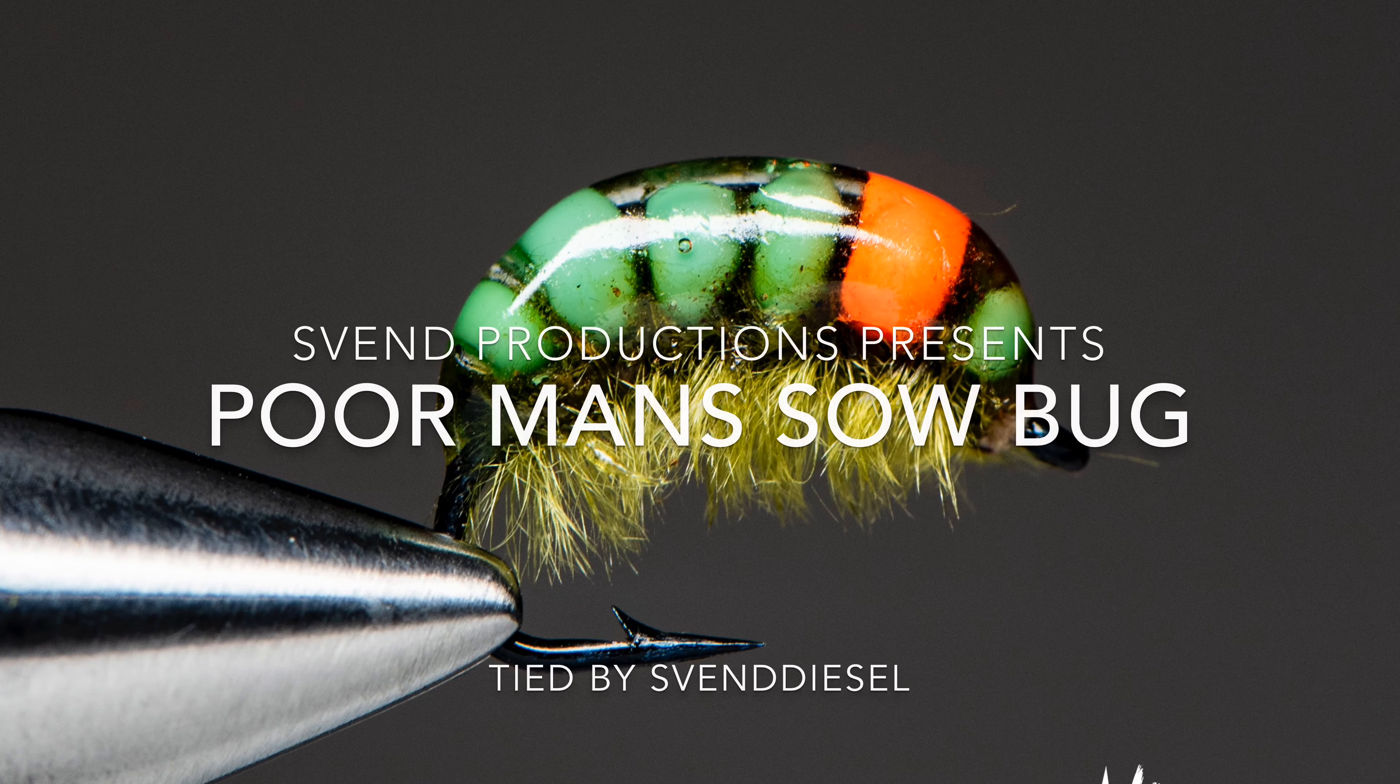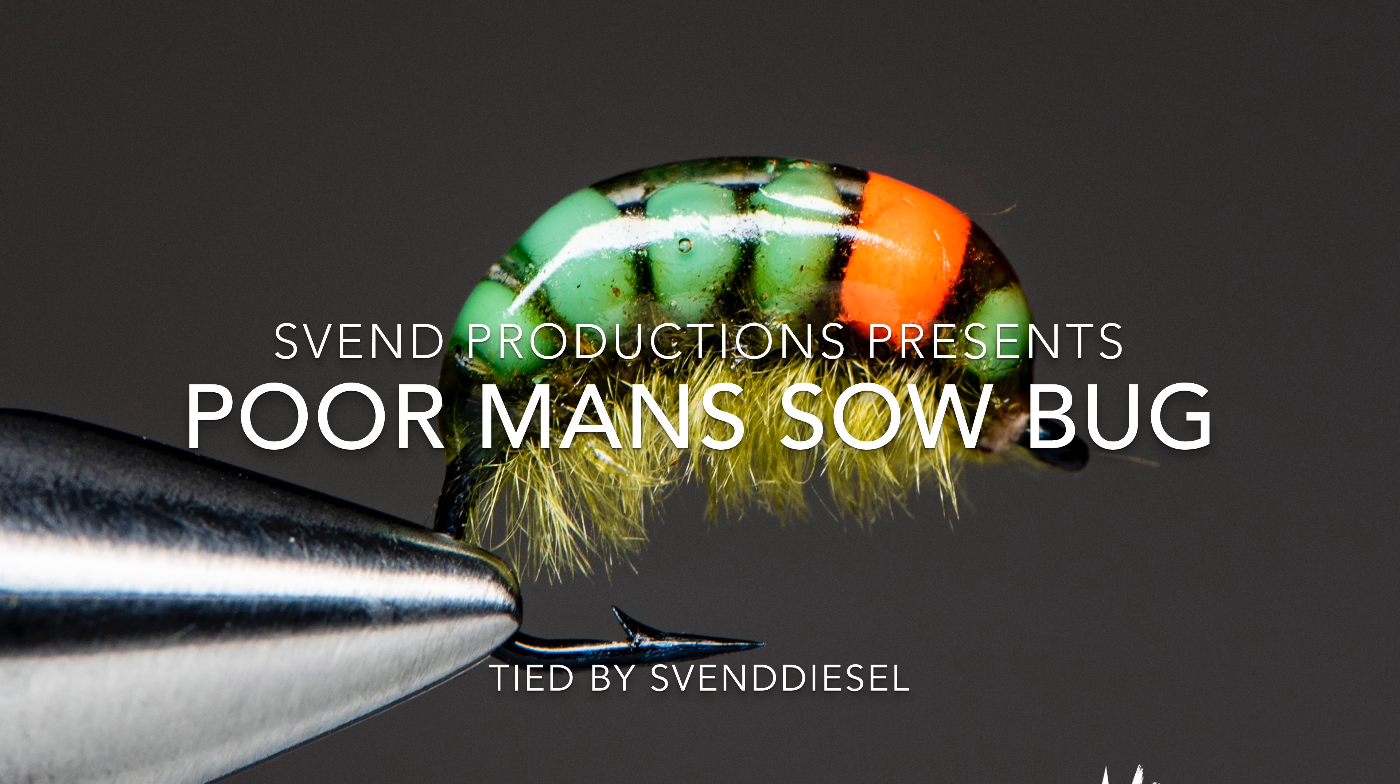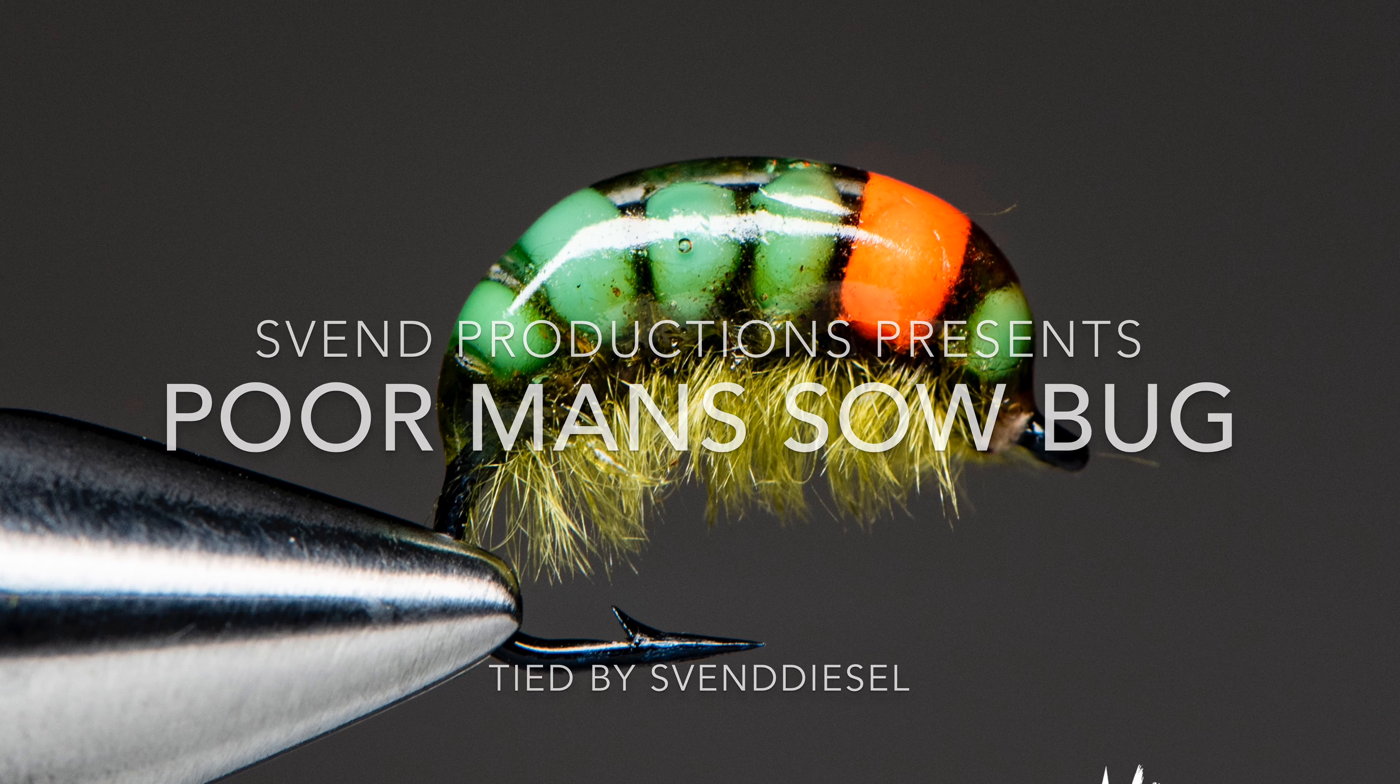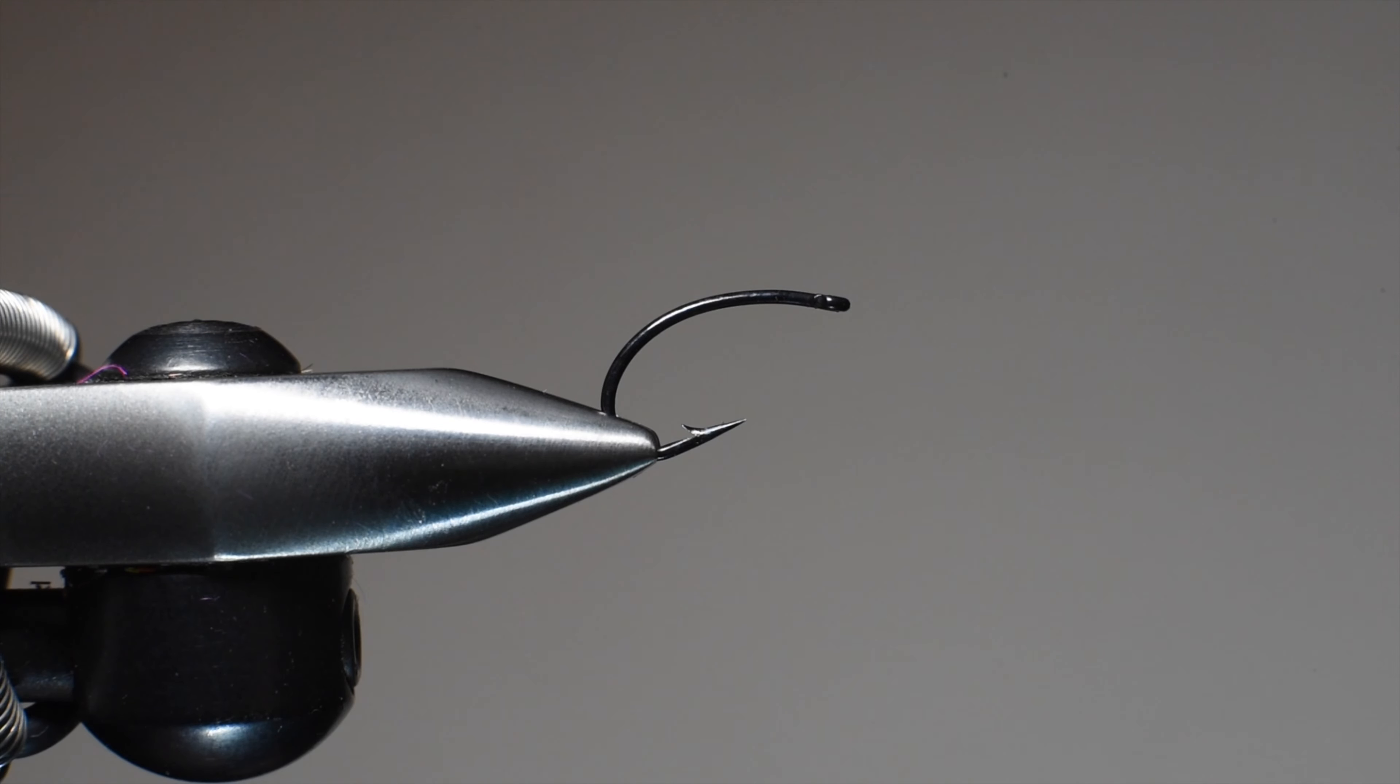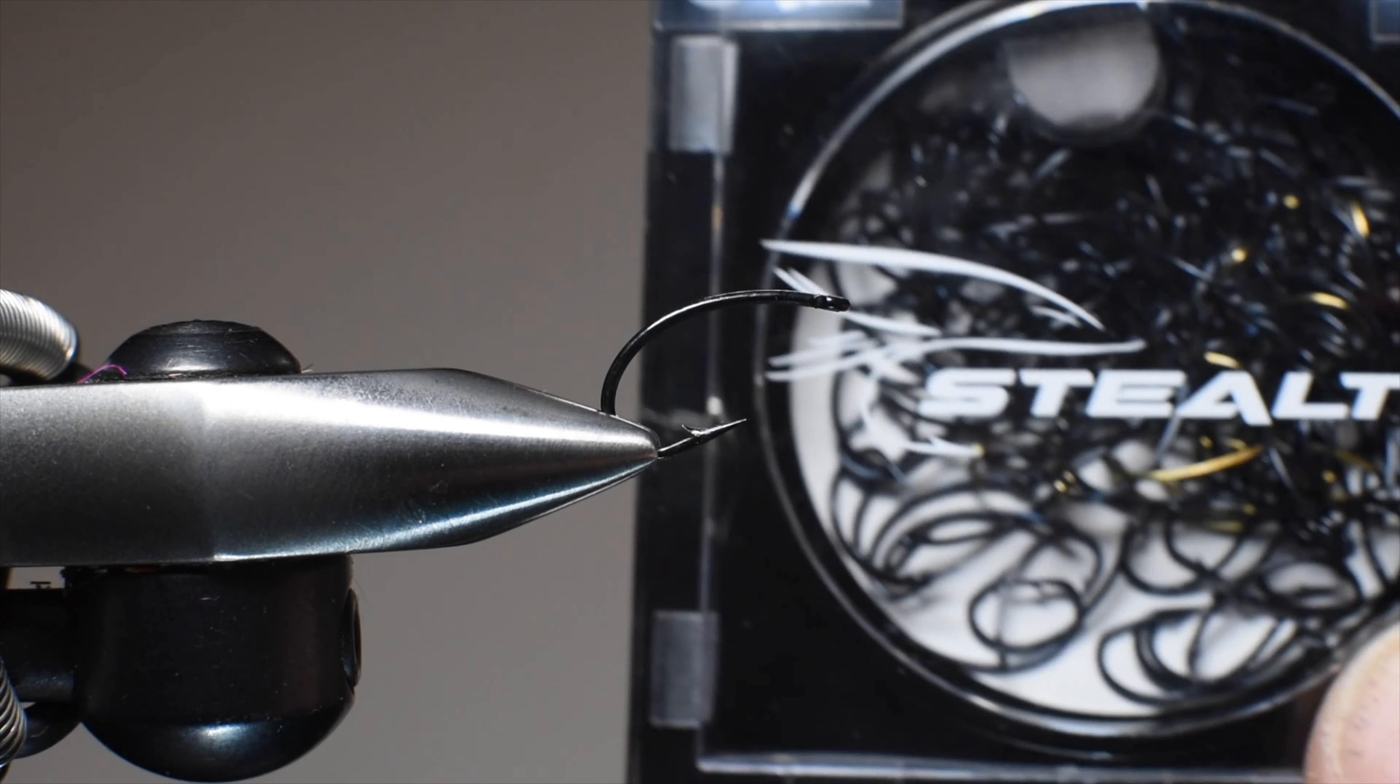What up everybody, Sven Diesel here. We're going to be tying up the Poor Man's Sow Bug. This is exactly the same as the Heavy Hitter, but we're only using one tungsten bead, which makes it a little bit easier to cast.